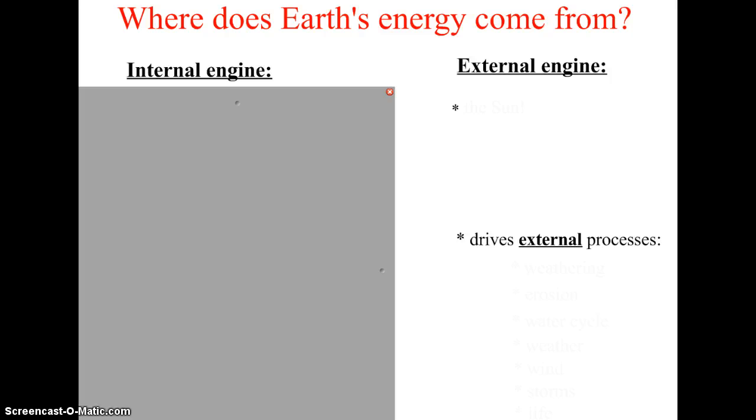So all processes that happen in the universe involve energy. The Earth's energy comes from two main sources. There is an external engine. So in other words, there's a source of energy that is external, or outside of the Earth. And there's a source of energy that's inside the Earth, or an internal engine. We'll start with the external. I'm sure if I asked you where we get most of our energy from, you would say that it's the Sun.